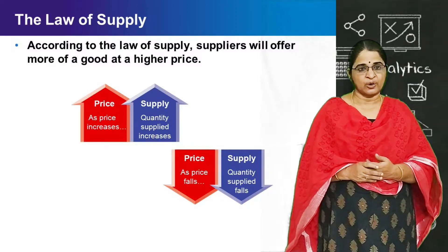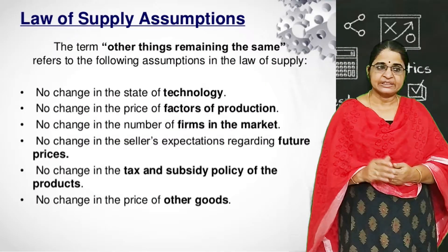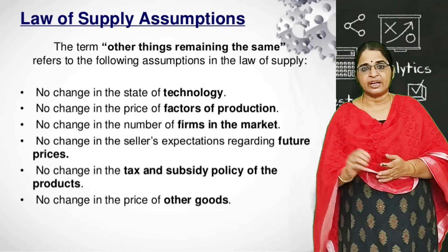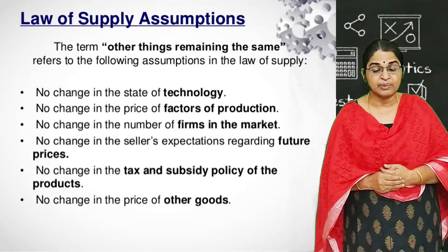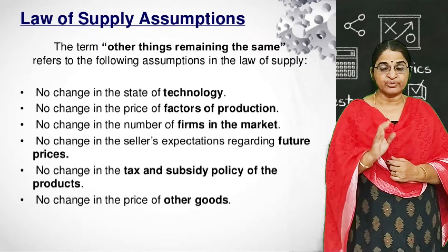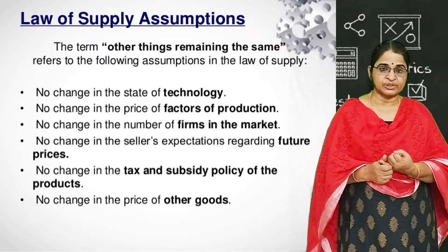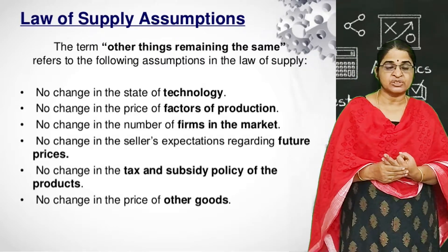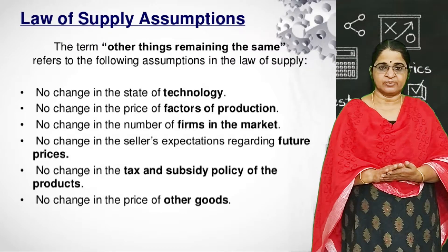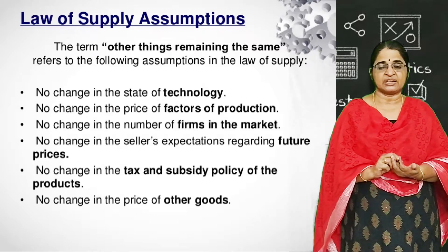This law is based upon certain assumptions. The important assumptions are: the technology of production remains constant; and input prices and unit tax also remain constant. In the last class we studied that there are mainly four factors determining supply of a commodity: the price of the commodity, technology of production, prices of inputs, and unit tax. The law of supply assumes that technology of production, input prices, and unit tax remain constant.